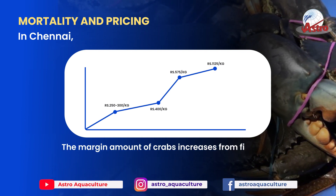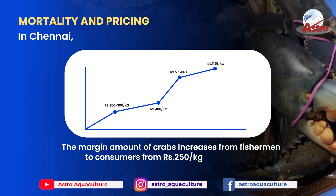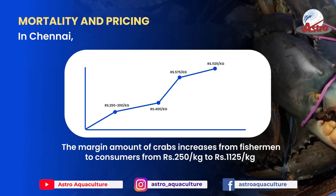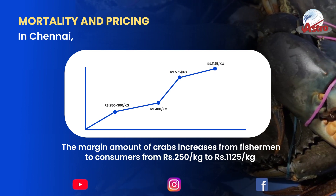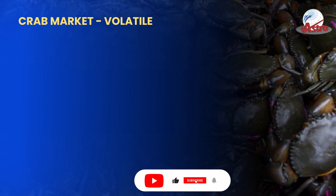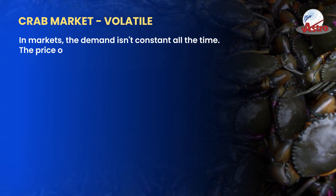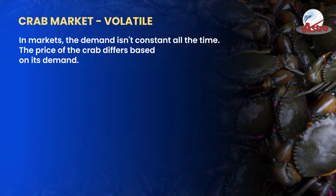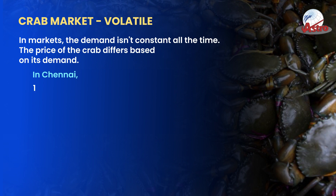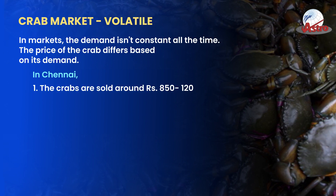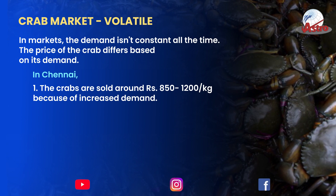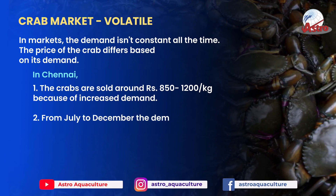The margin amount increases from fishermen to consumers — from 250 rupees per kilogram to 1,125 rupees per kilogram. In markets, the demand isn't constant all the time and the price of the crab differs based on its demand. In Chennai, the crabs are sold at around 850 to 1,200 rupees per kilogram because of increased demand from July to December.